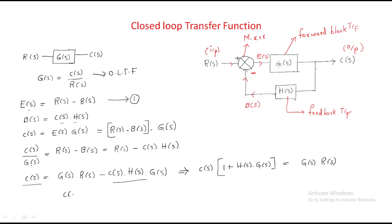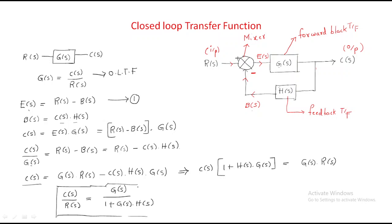From this derivation, the closed-loop transfer function is C(s)/R(s) = G(s) / [1 + G(s)·H(s)]. So whenever we add a negative feedback with gain H(s), the closed-loop transfer function equals G(s) divided by 1 plus G(s)·H(s).